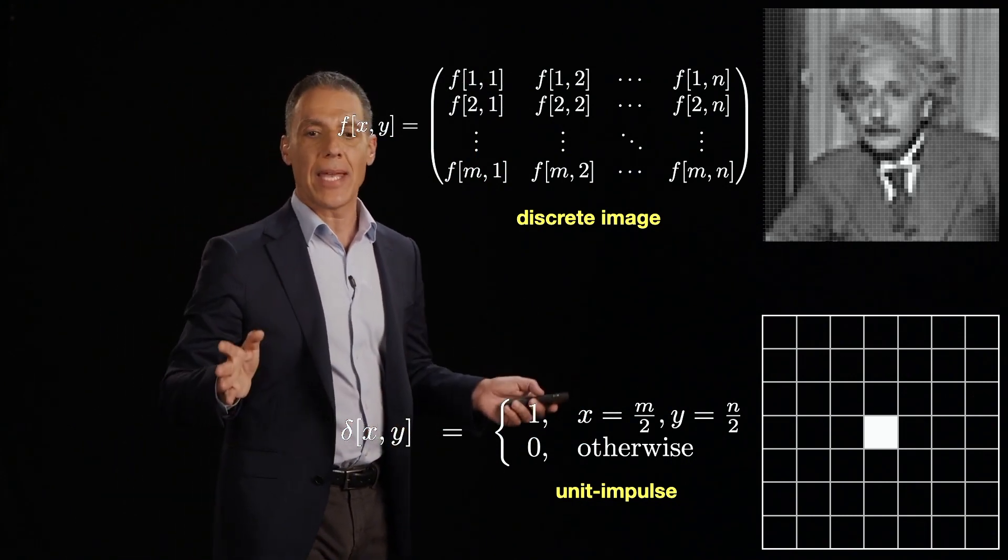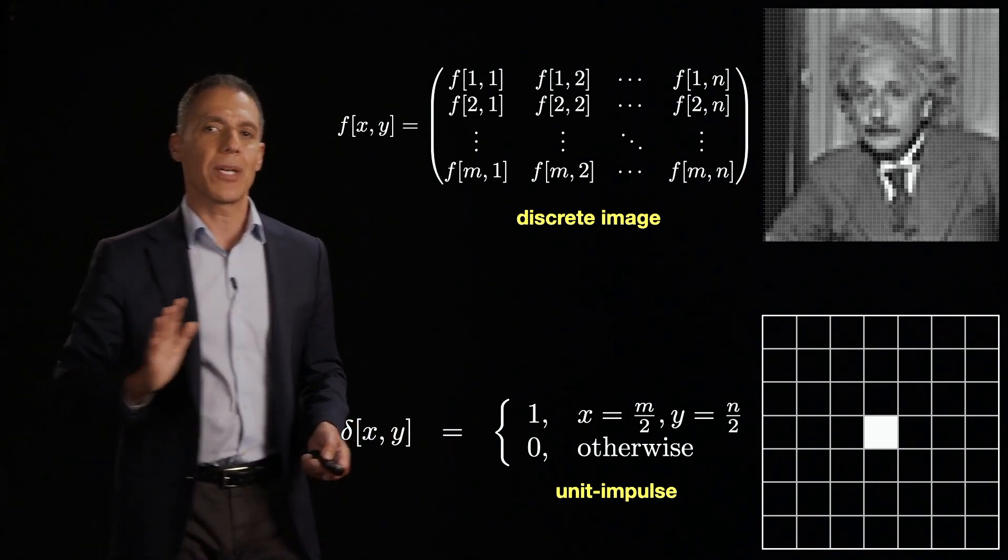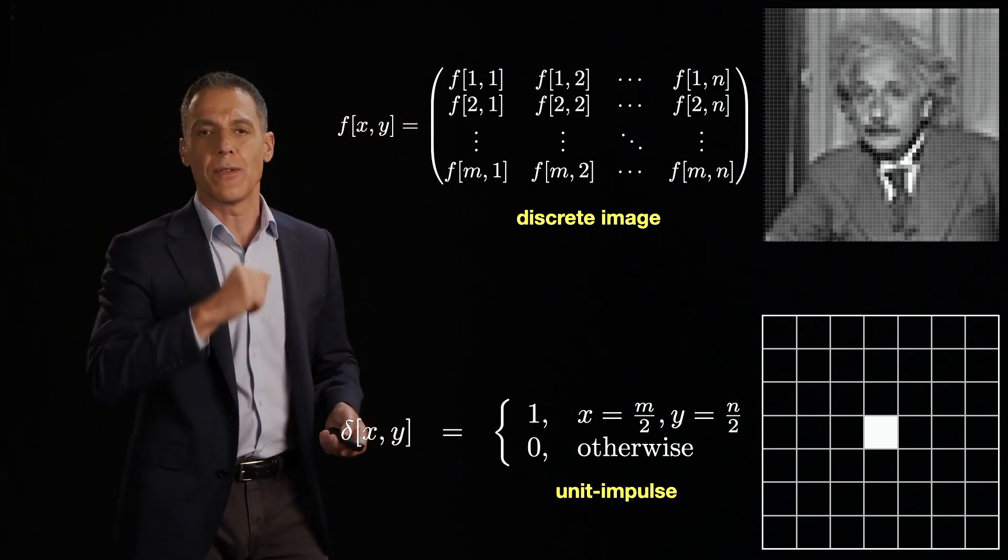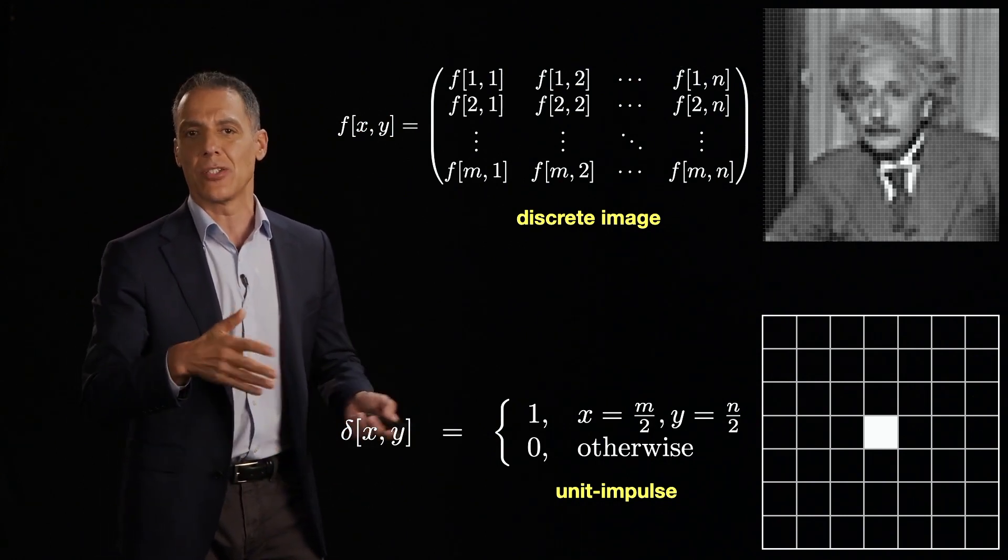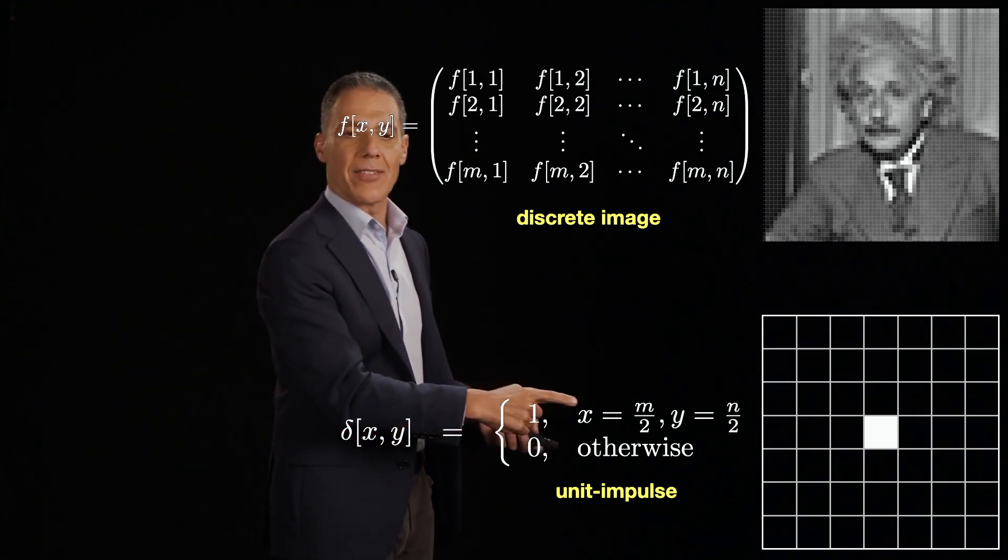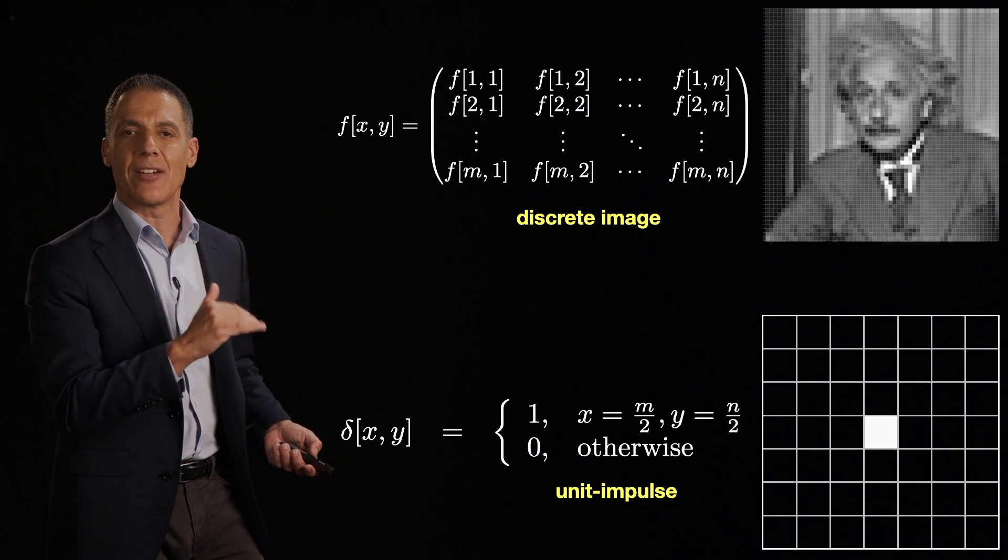So imagine an n by n image where every pixel is 0 and 1 pixel in the center is 1, or if you want 255. We'll use normalized units here because we're talking about the impulse. And notice that I haven't set that at 0 now, the way I was doing with the signal. I've set it at the center of the image.